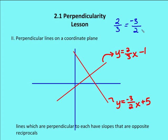Now, if two lines have the same slope, that means that they're parallel to each other. So if the original line has a slope of two-thirds, and a second line also has a slope of two-thirds, I can say that the two lines are either identical or they're parallel to each other.